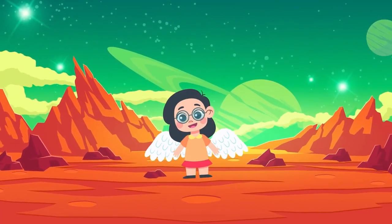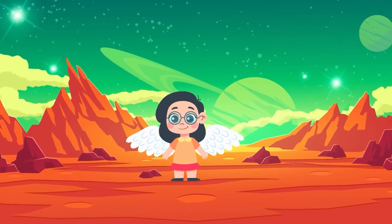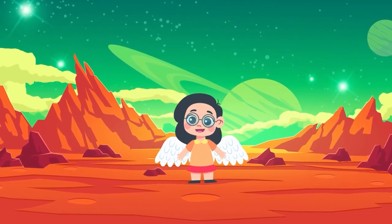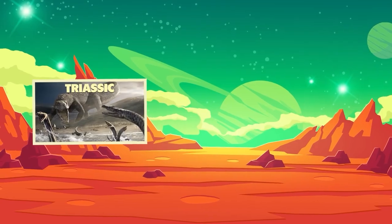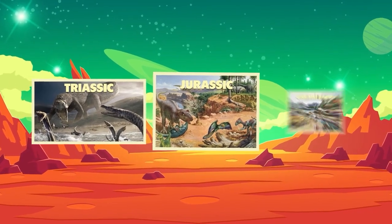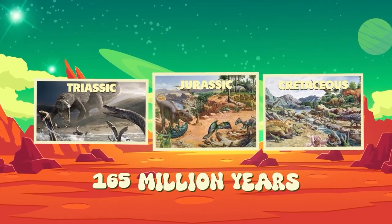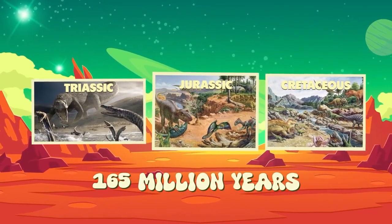Dinosaurs were giant reptiles that lived millions of years ago, long before humans ever existed. They lived during the Mesozoic era, which had three periods: Triassic, the beginning; Jurassic, where dinosaurs got bigger; and Cretaceous, the age of giant dinosaurs. Dinosaurs ruled the Earth for over 165 million years.